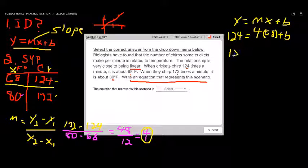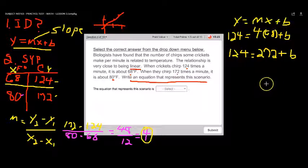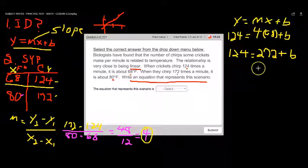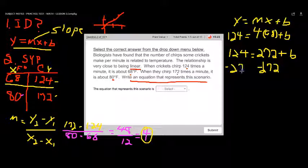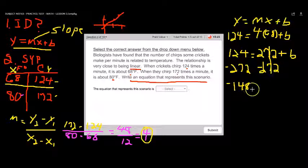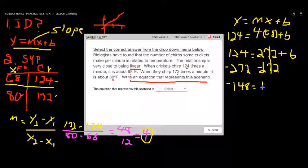And then we're just going to do some math here. So we're just going to drop that 124 down. And then 4 times 68 is 272 and then B. And if you've been working on the other lessons leading up to this, you know that you need to do the opposite. So we're going to get minus 272 and minus 272 over here. So that's going to give us negative 148. That's going to cancel out 272 minus 272. So now we know what B is.